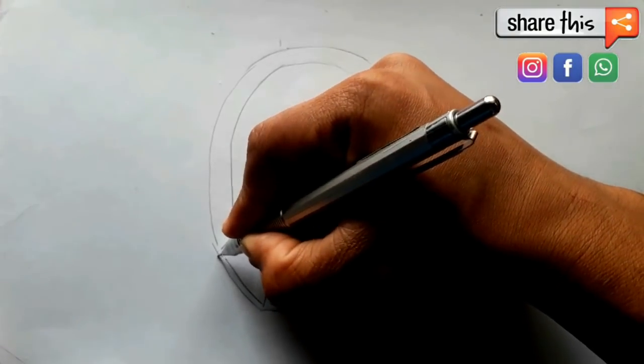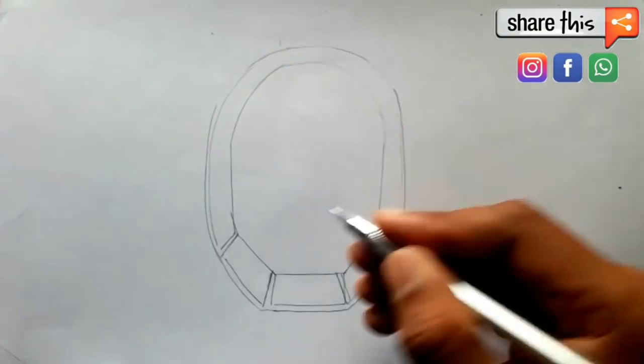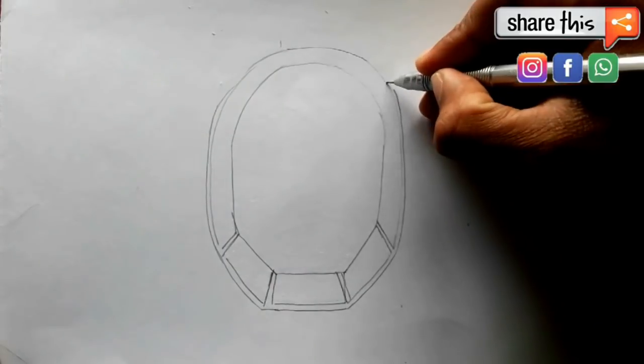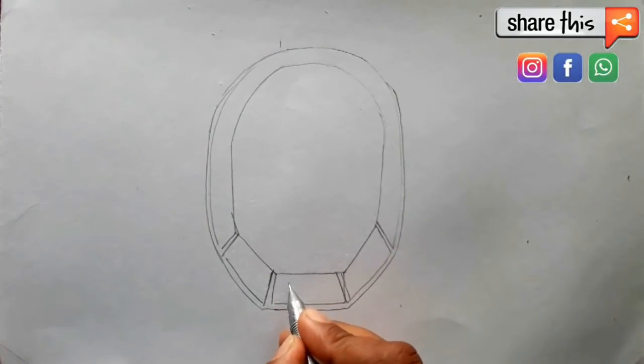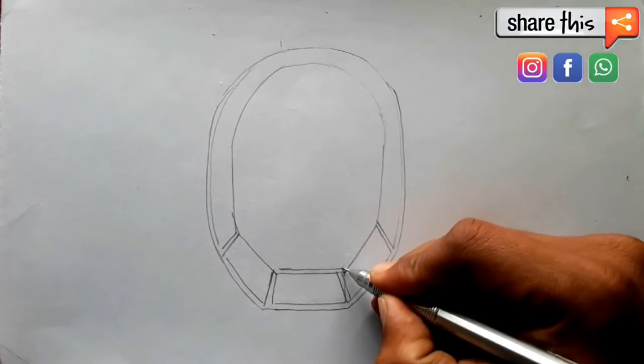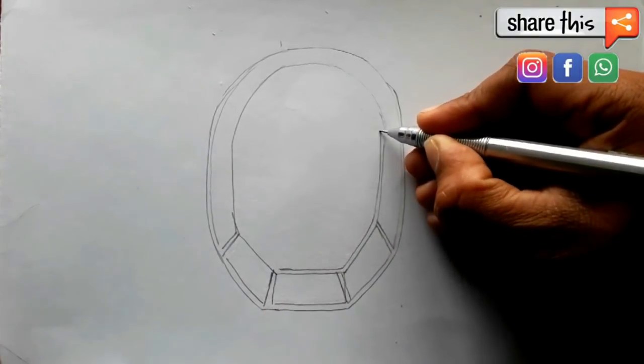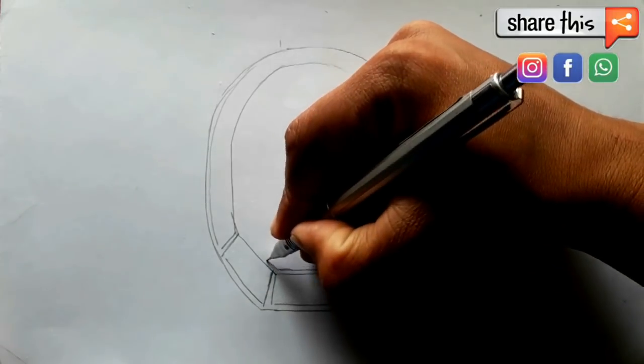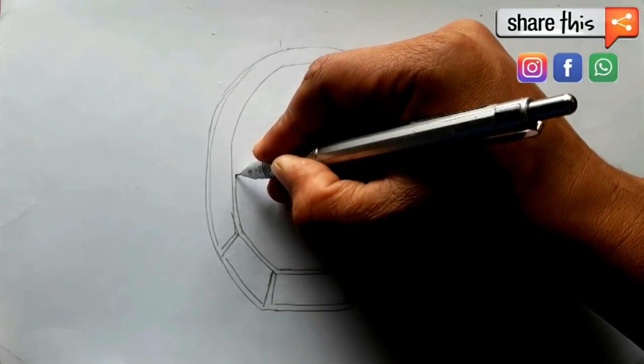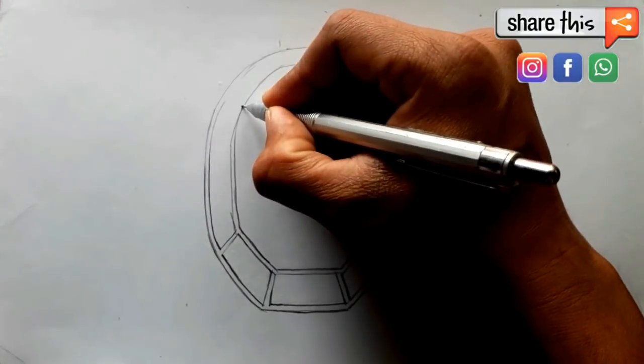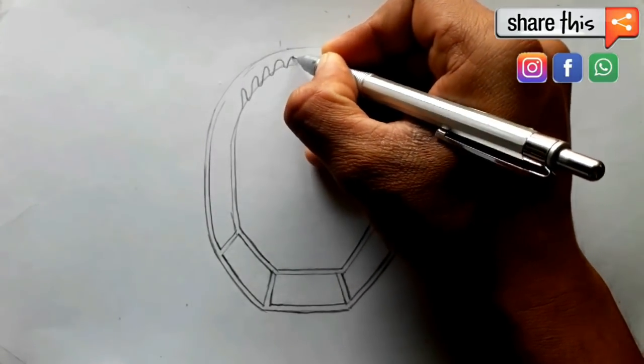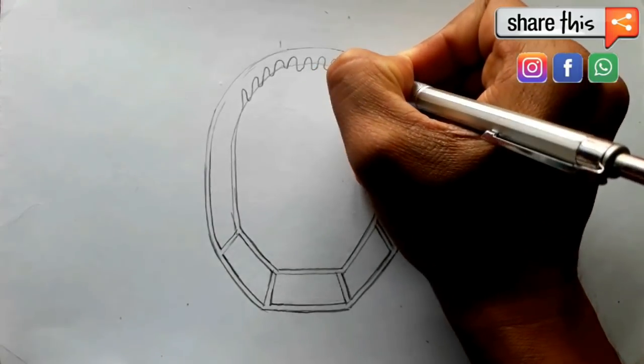And now we have already achieved 9,300 plus subscribers. That's a great and huge achievement for us in only one year. Watch this whole tutorial step by step and I hope this will help you to draw and achieve full marks on this diagram of animal cell.